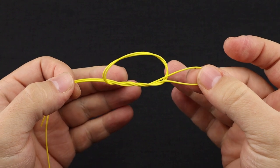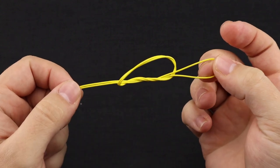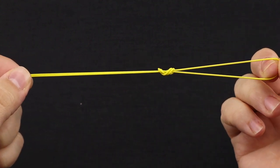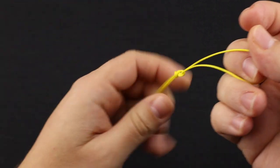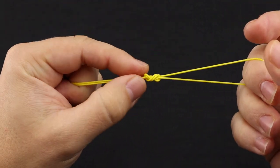So your knot should look something like this. Now go ahead and slowly start pulling the knot together. And once you get to the point, right before you're going to snug it all tight, go ahead and lubricate your knot.